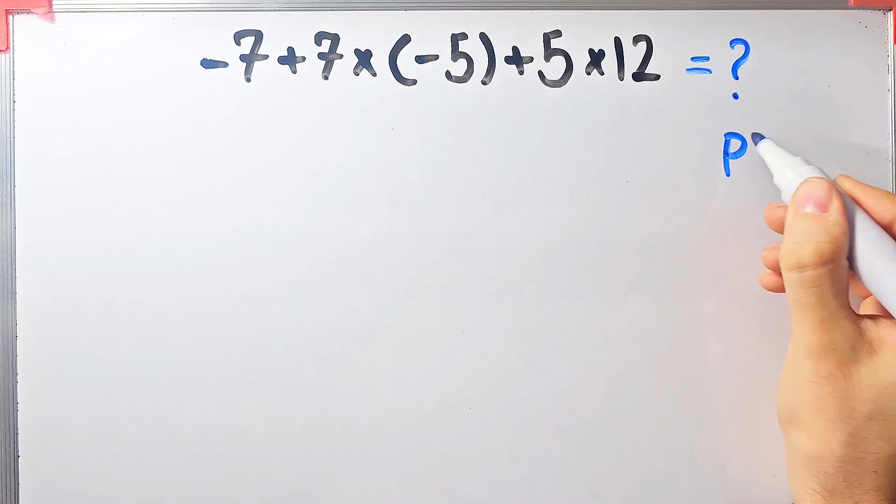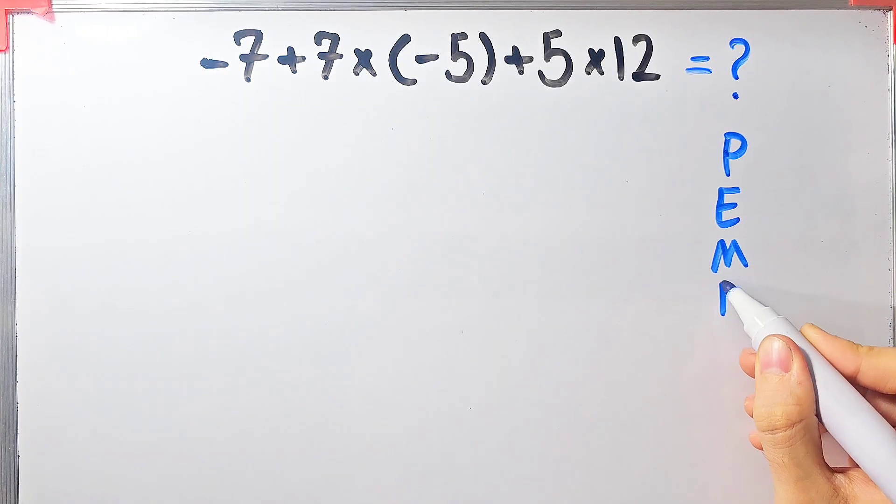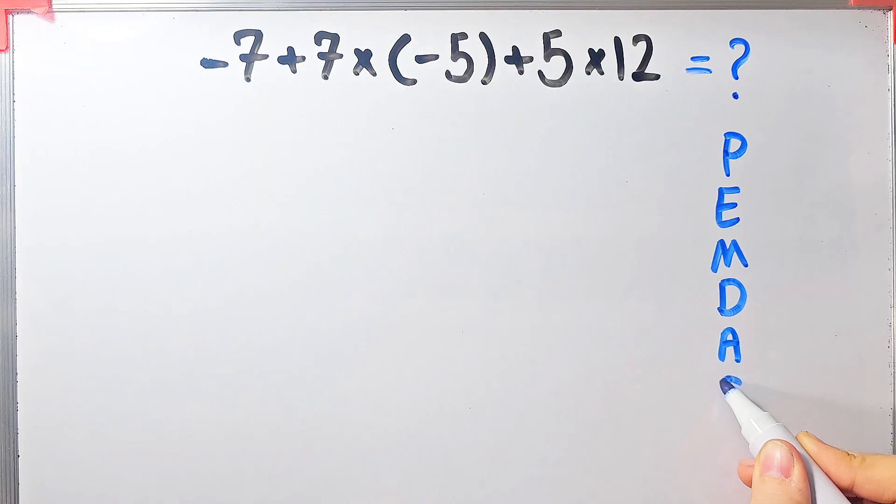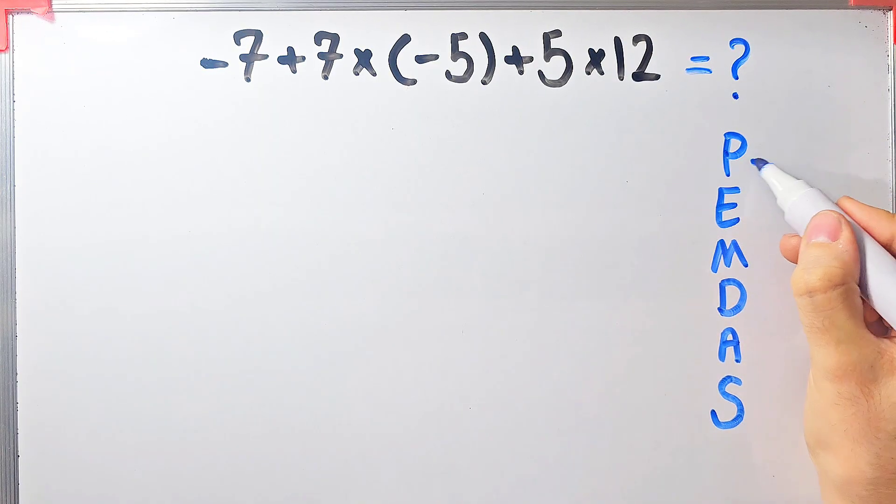PEMDAS shows the priority of the mathematical operations, and if you don't pay attention to this rule, you get the wrong answer. In this rule, P stands for parentheses.